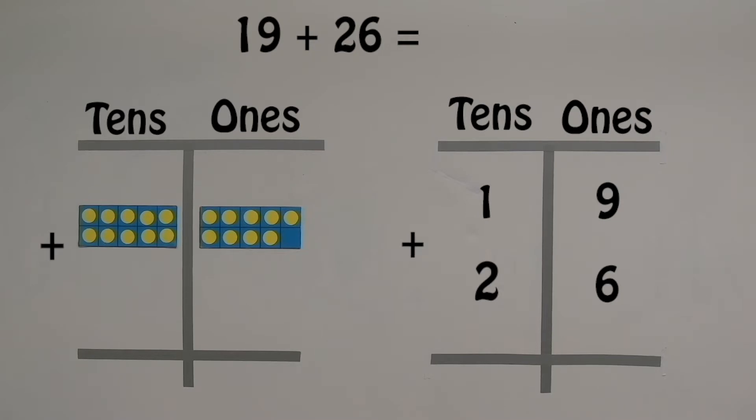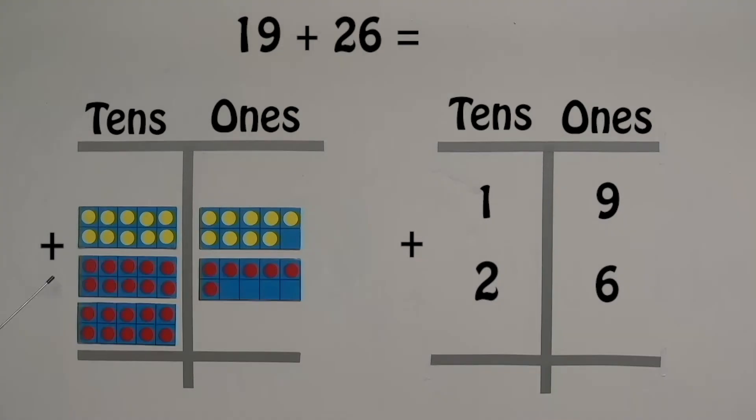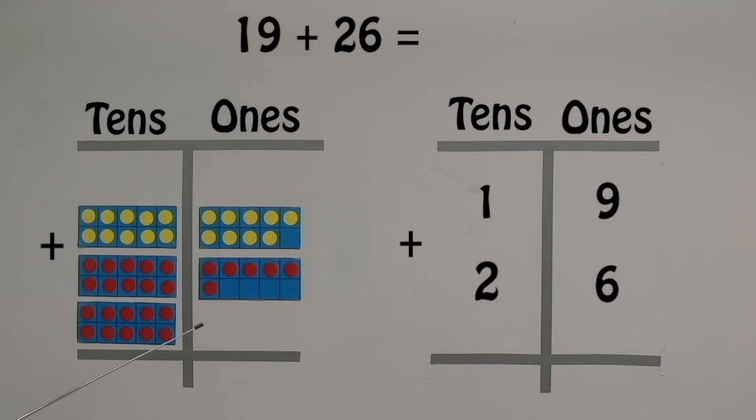19 is 1 ten and 9 ones. 26 is 2 tens and 6 ones.